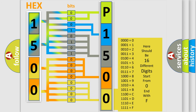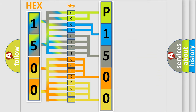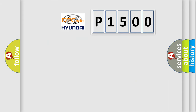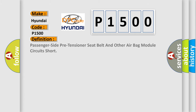We now know in what way the diagnostic tool translates the received information into a more comprehensible format. The number itself does not make sense to us if we cannot assign information about what it actually expresses. So, what does the diagnostic trouble code P1500 interpret specifically for Hyundai car manufacturers? The basic definition is: Passenger side pre-tensioner seat belt and other airbag module circuits short.